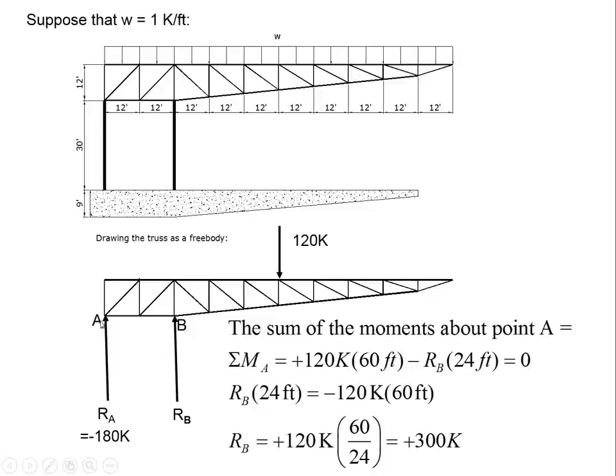Okay, now if we take the sum of the moments about point A, which is right here, again we have clockwise motion tending to be induced by this 120 kip force about point A. So we have plus 120 kips, and the lever arm between the line of action of the 120 kip force and point A is 5 times 12 feet, or in other words, 60 feet.